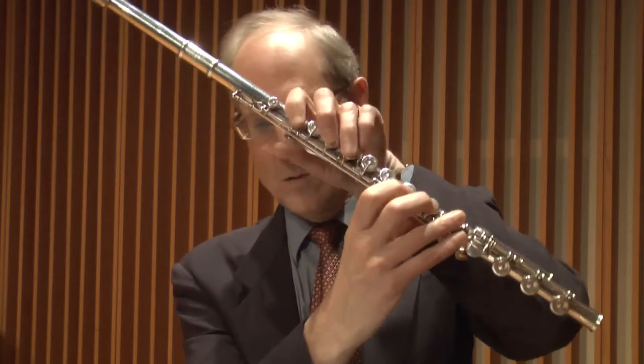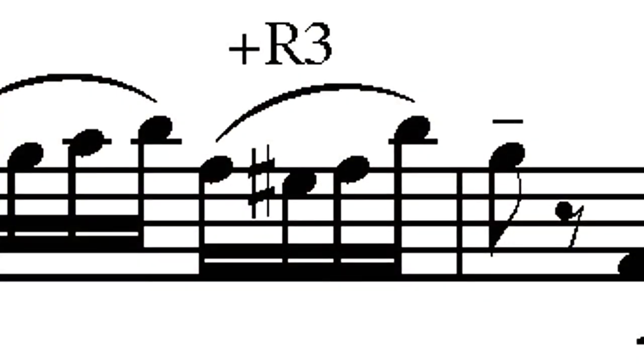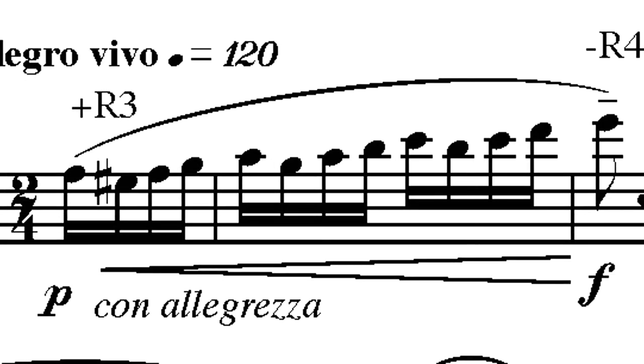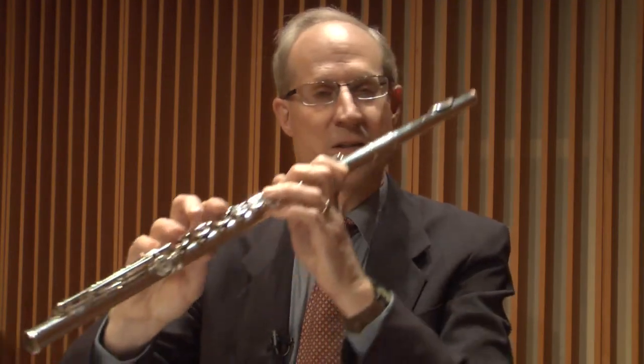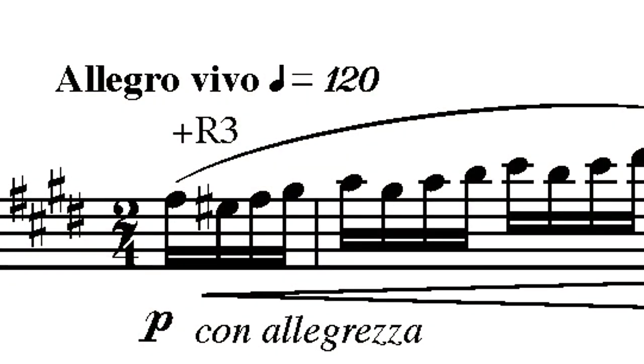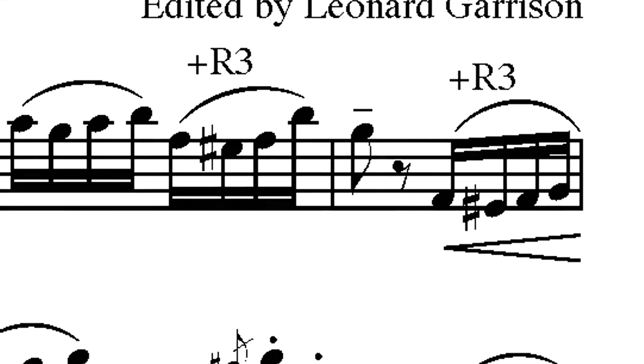Another aspect is the use of alternate fingerings to facilitate technique and help correct intonation. Keep your right hand third finger, R3, down where E-sharp falls between two F-sharps — F-sharp, E-sharp, F-sharp. That occurs at the very beginning of the piece. Just keeping this finger down leads to faster playing. I have it marked throughout the etude in my edition where it says 'plus R3.'